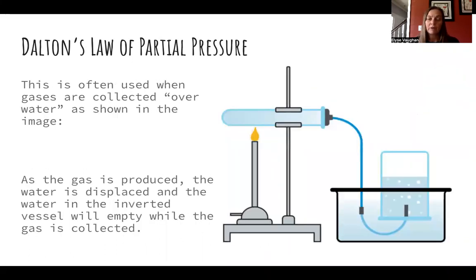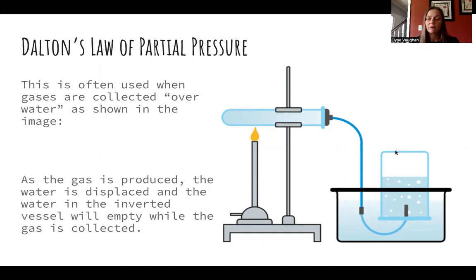One of the most common applications of Dalton's law is collecting gases over water. When we want to know how much gas is being produced in an experiment, we might collect it in a device like a eudiometer. For example, heating calcium carbonate causes it to decompose and produce carbon dioxide, which is then collected above water — the water gets displaced and only the gas is trapped. We can measure the volume of gas collected, determine the pressure, and find the number of moles using PV = nRT and stoichiometry.